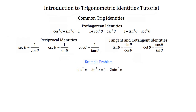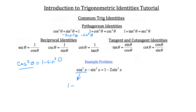Let's start on the left hand side with the term cosine squared of x. Looking at our Pythagorean identity: if I wanted to get cosine squared of theta by itself, I'd simply subtract sine squared theta from both sides of the equation. What you'd get is cosine squared theta is equal to 1 minus sine squared theta. So I'm going to replace cosine squared x with this value, 1 minus sine squared x. Then bringing down our minus sine squared x, we have: 1 minus sine squared x minus sine squared x is equal to 1 minus 2 times sine squared x.